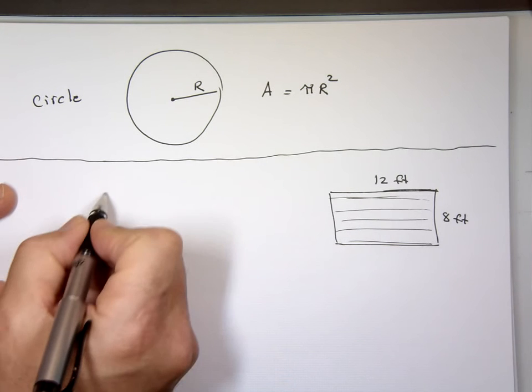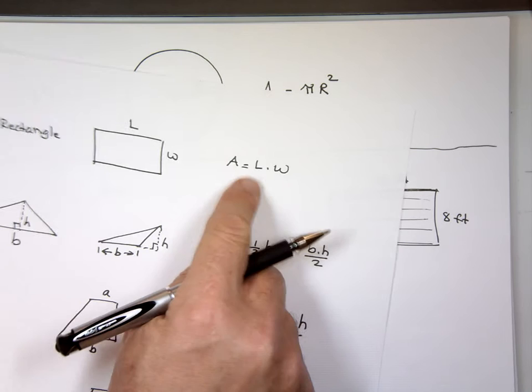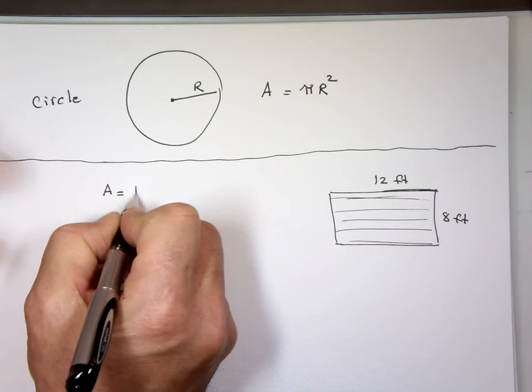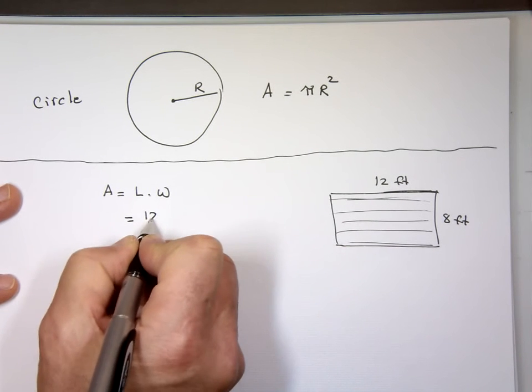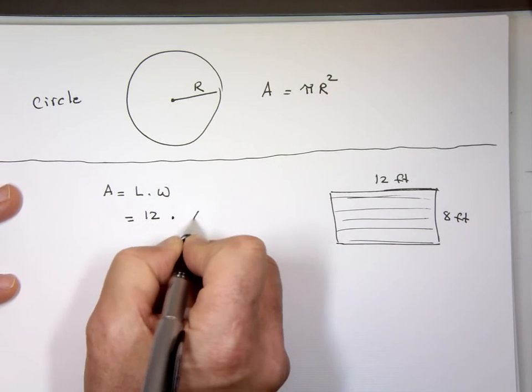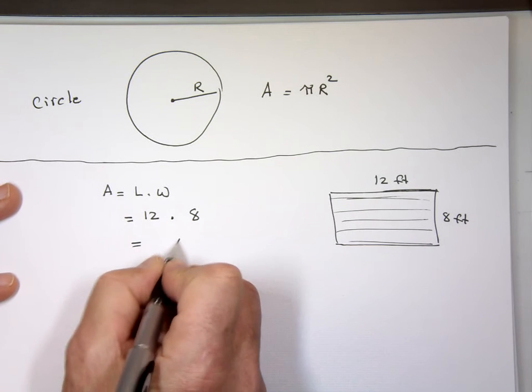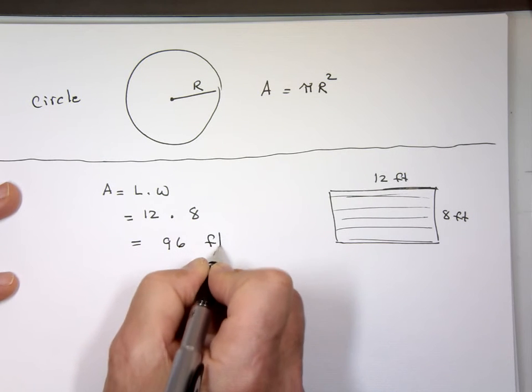So this shape is what? What kind of a shape is this? That's a rectangle. And the area of a rectangle is length times width. So the length is 12 times the width is 8. That's 96. Notice the unit: square feet.